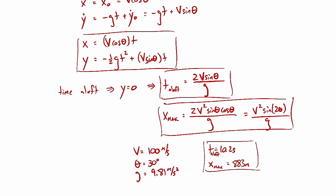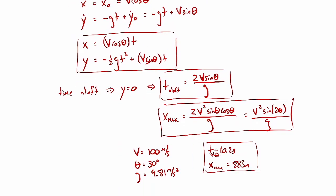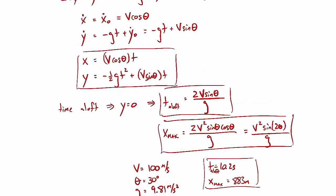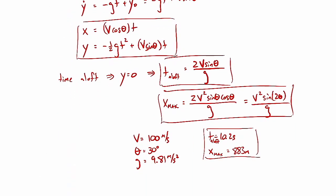A few key takeaways: first, we had to write far fewer things down, so we're less likely to make mistakes. Second, we can immediately see how things depend on variables — there's no mass in t_aloft or x_max, so mass doesn't matter. If you double the initial speed, x_max goes up by a factor of four since it depends on v². That's not obvious when you just work with numbers.